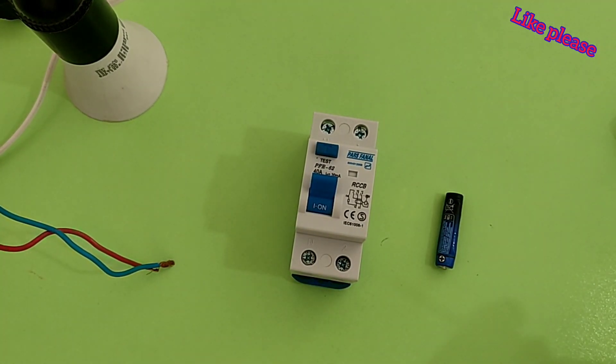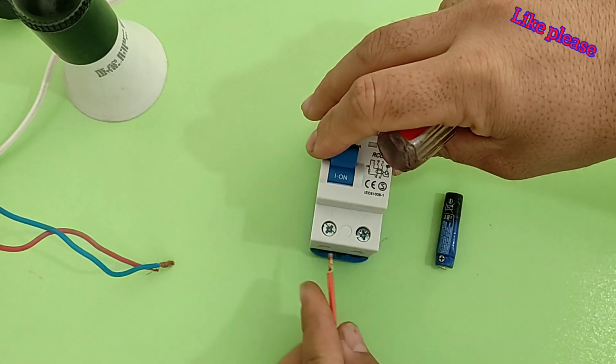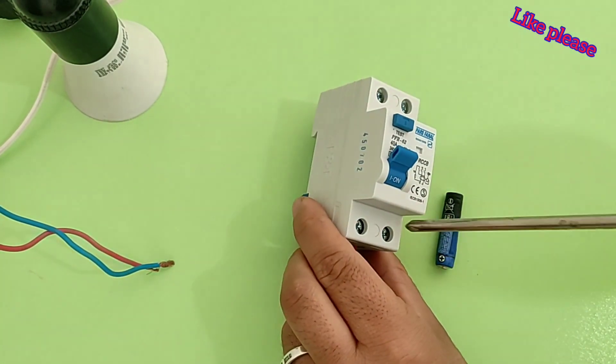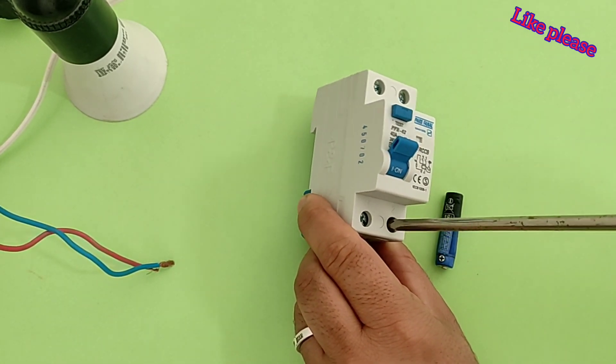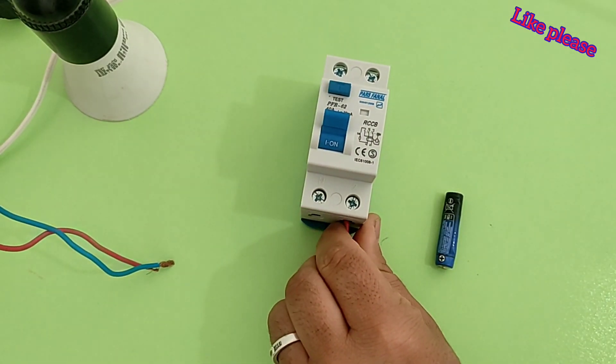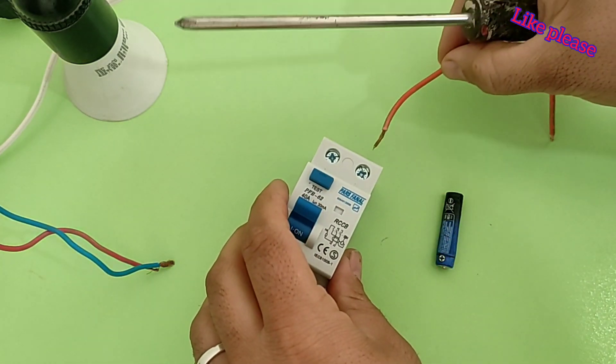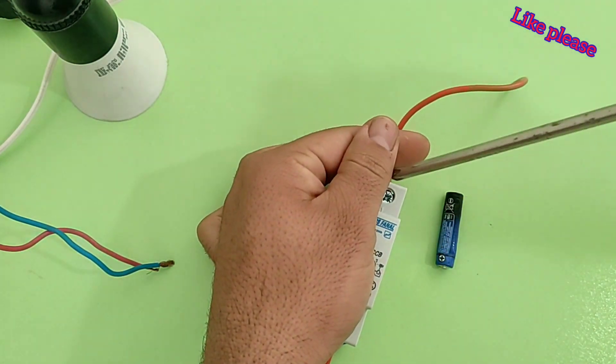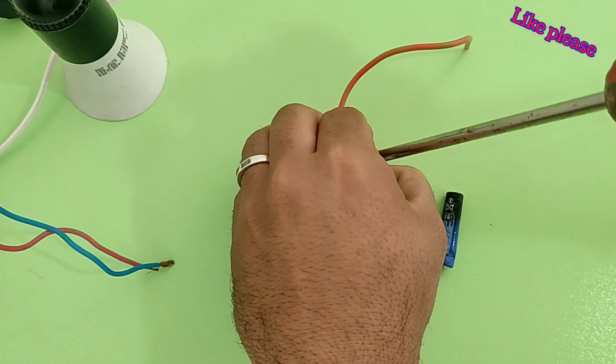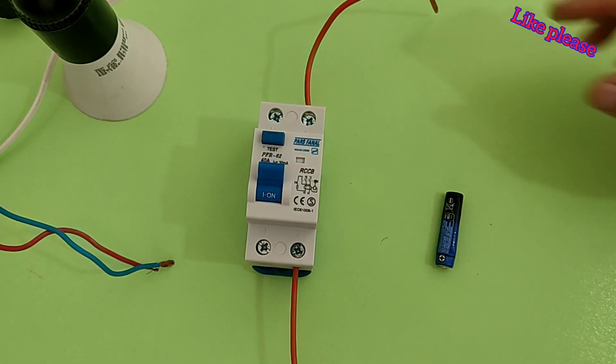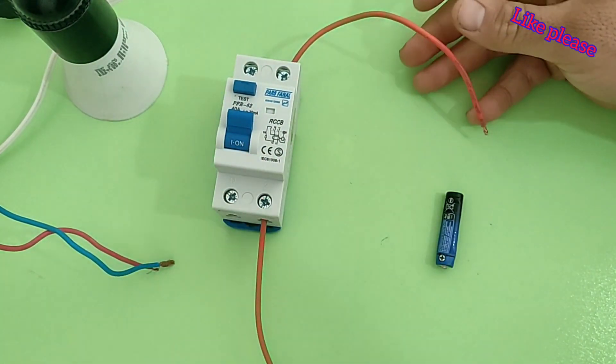To test with the battery, we first connected the wire to input and output of one of the blades. And then we connect these two wires to the positive and negative ends of the battery.